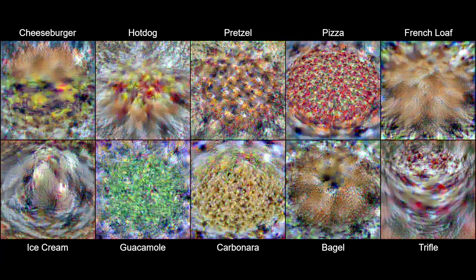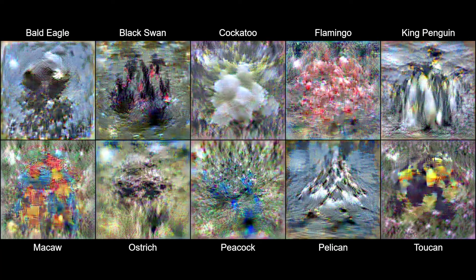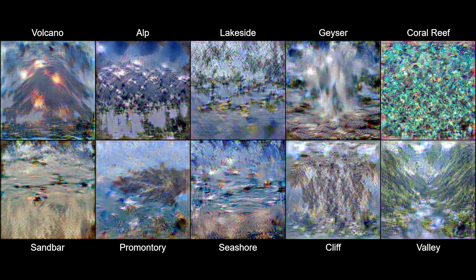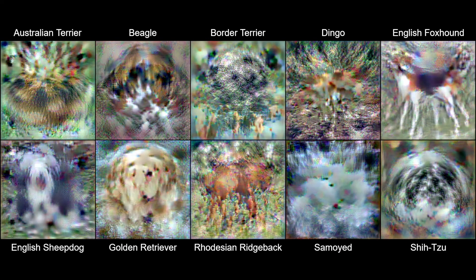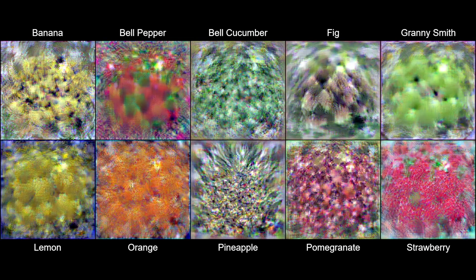Our method is also capable of distilling even higher resolution images. We distill many 10-class subsets of ImageNet, including food, birds, geography, dogs, and fruit.